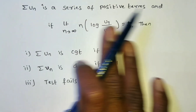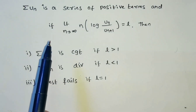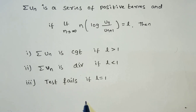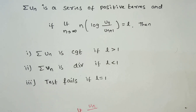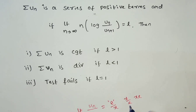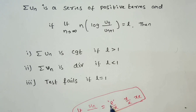When do we apply the logarithmic test? We apply it when the ratio test fails. When the ratio test fails, we generally also apply Raabe's test. But we apply the logarithmic test specifically when, in the ratio test, the limit of un/un+1 contains e. If it does not contain e, we generally go for Raabe's test.